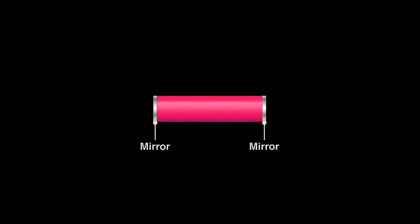Maiman silvered the ends to reflect the light within the ruby cylinder. He made the two ends of the rod astonishingly parallel to each other. From top to bottom, the distance between these two mirrors differs by no more than 200 nanometers.